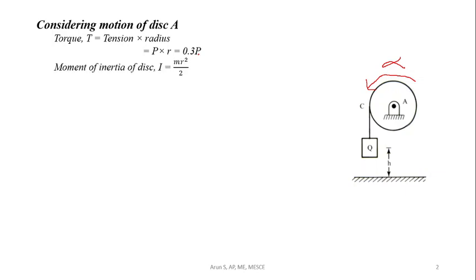Moment of inertia of the disk, I, is given by MR squared by 2. So, weight is 145 by 9.81 times 0.3 squared by 2. We will get 0.665 kilogram meter squared.